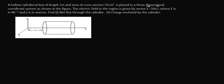In this question we are supposed to calculate the net flux through the cylinder. The cylinder has 3 surfaces: the first plane surface, the second plane surface, and the third one, which is the curved surface. The electric field here is a variable electric field, so the value of electric field changes with respect to x — it is not constant along the x direction. We will calculate the electric flux through each surface and add all the fluxes together.